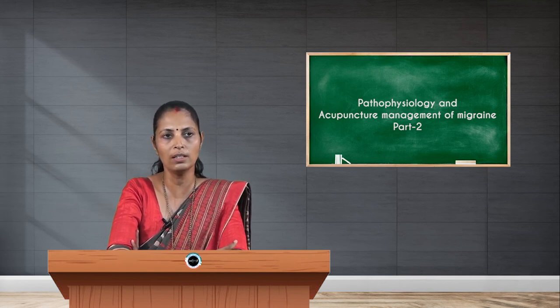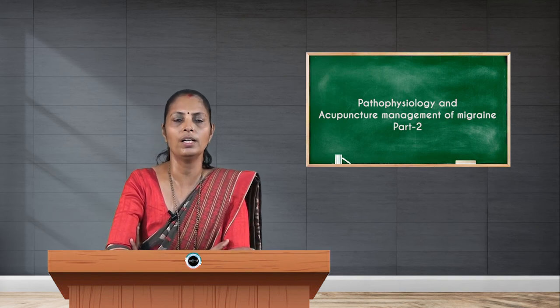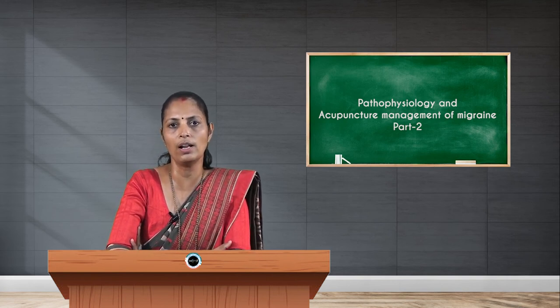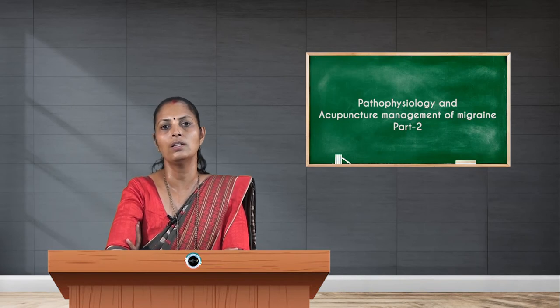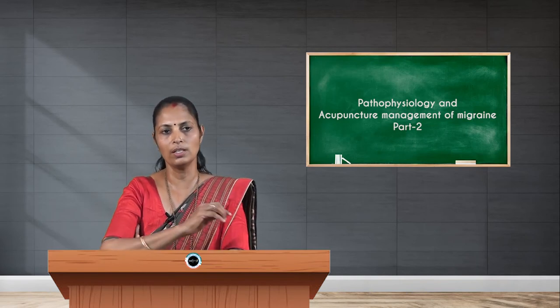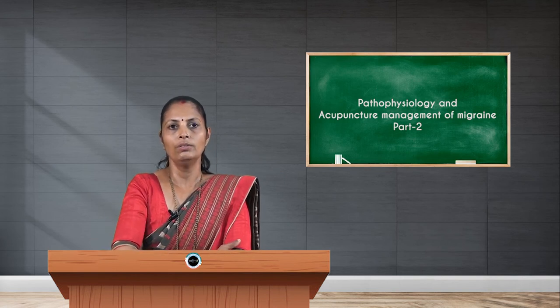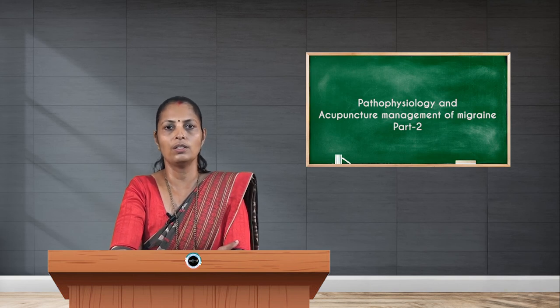Points for wind damp: GV 20 helps to clear the pathogen from the head. CV 12 is the mu front point for the stomach, located 4 cun above the center of the umbilicus. UB 20 is the shu point for the spleen, which activates the spleen. ST 36 helps to tonify the spleen and stomach. ST 40, located 5 cun below the tip of the tibial tuberosity and one finger breadth lateral, helps to resolve dampness. GB 20 again helps to clear pain from the head.